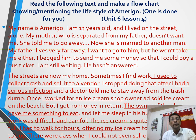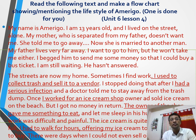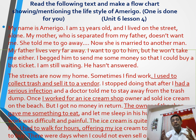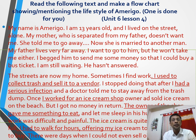In the second part of this extract, I have underlined the important information. I strongly suggest that before writing the flowchart, you must underline the important information. For example, the important information I have underlined includes: 'I used to collect trash and sell it to a vendor,' 'I had a serious infection,' 'I worked for an ice cream shop,' and 'the owner of the shop gave me something to eat and I had to work for hours offering my ice cream.' These underlined phrases or sentences can be used to make your flowchart keywords.